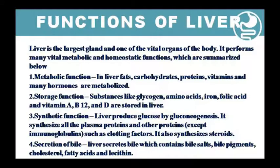Storage function: substances such as glycogen, amino acids, iron, folic acid, vitamin A, B12, and D — all are stored in the liver. Glycogen is stored in the liver and muscle. Amino acids are stored in the liver. Iron is stored in the liver because it is needed in metabolism.